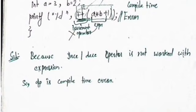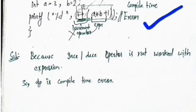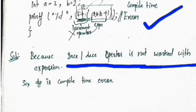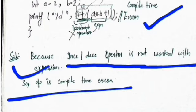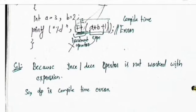Another question has void main with int a equals 3, b equals print(++a * b + 1). The printf statement does not give any output because it produces a compile time error — the increment and decrement operator does not work with an expression. So the output is compile time error.